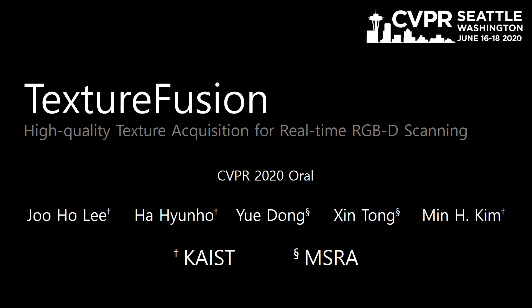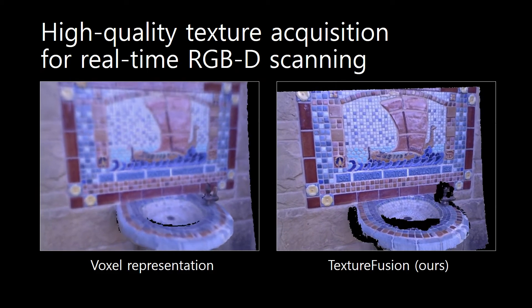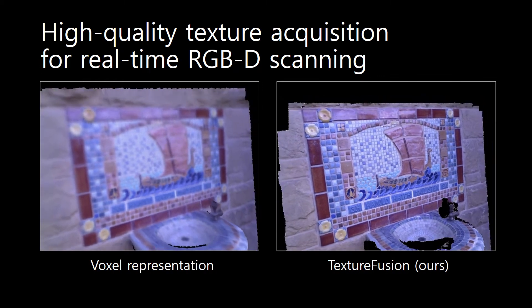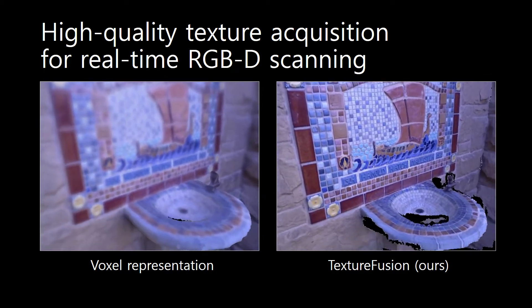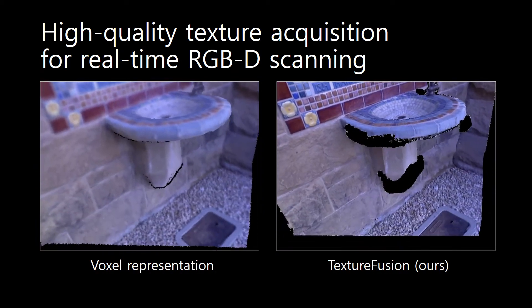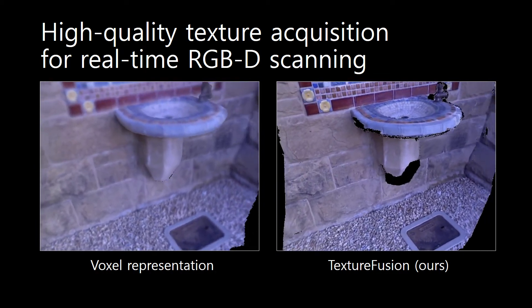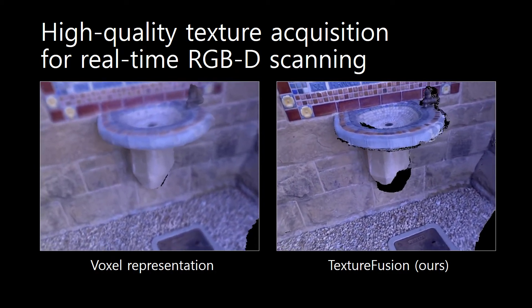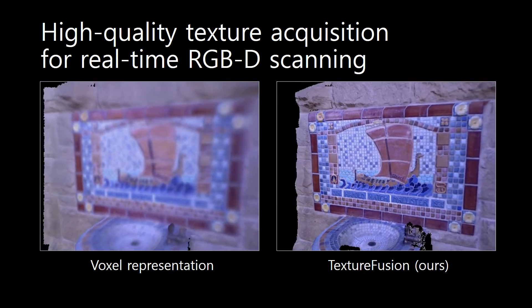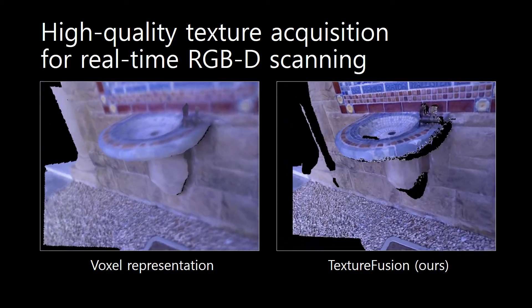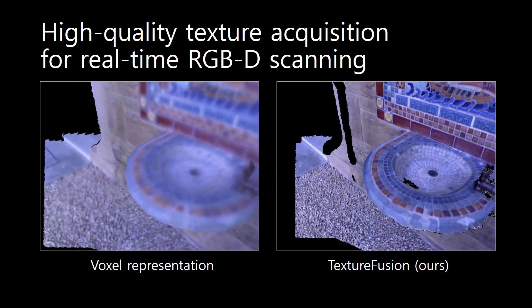We propose TextureFusion, high-quality texture acquisition for real-time RGBD scanning. Our main goal is real-time 3D scanning with high-quality texture. The existing real-time texture representation restores color for each voxel, resulting in the low-quality texture on the left. Our method on the right enables real-time 3D scanning with aligned texture in high quality.